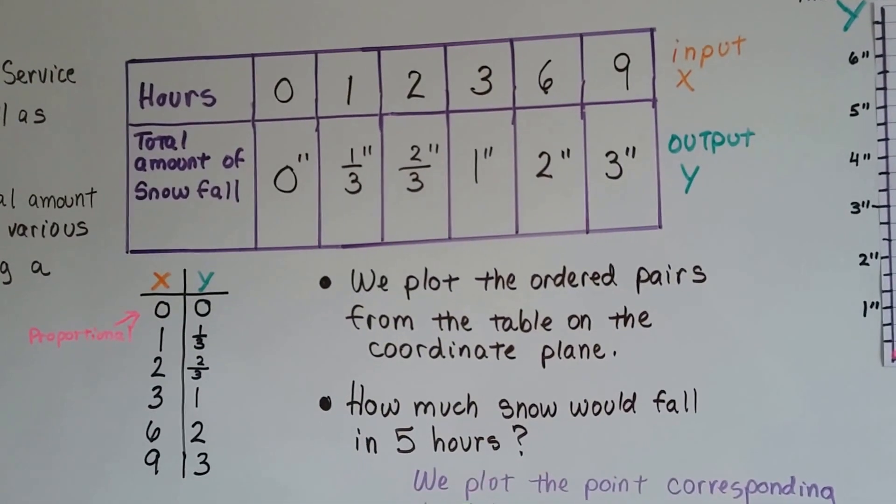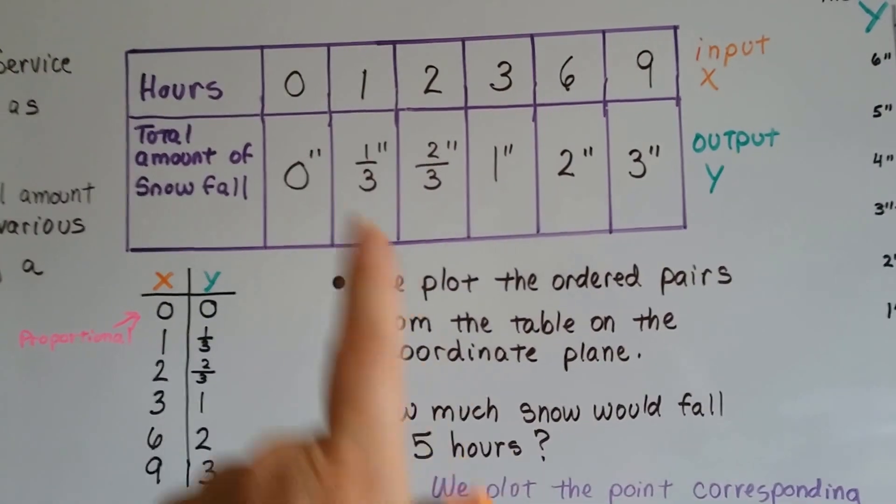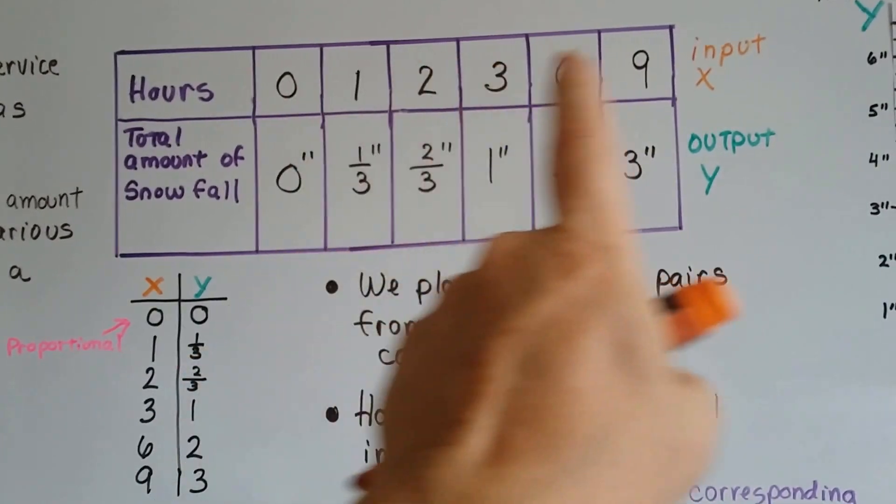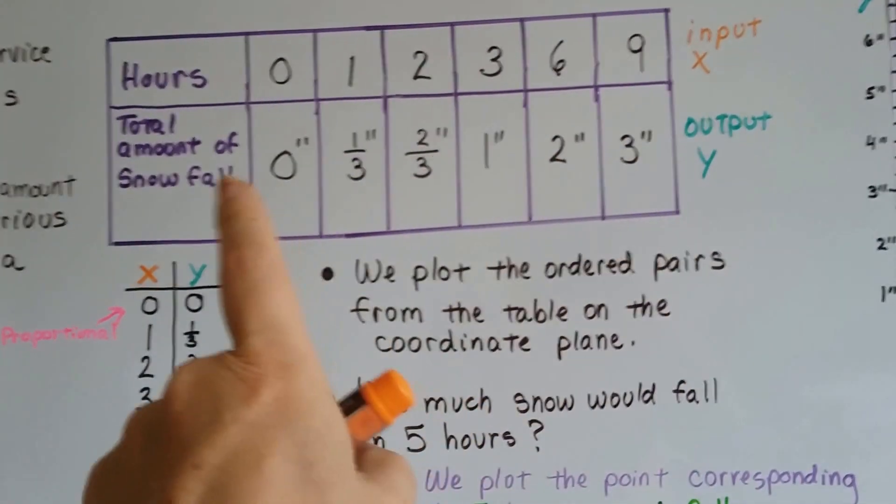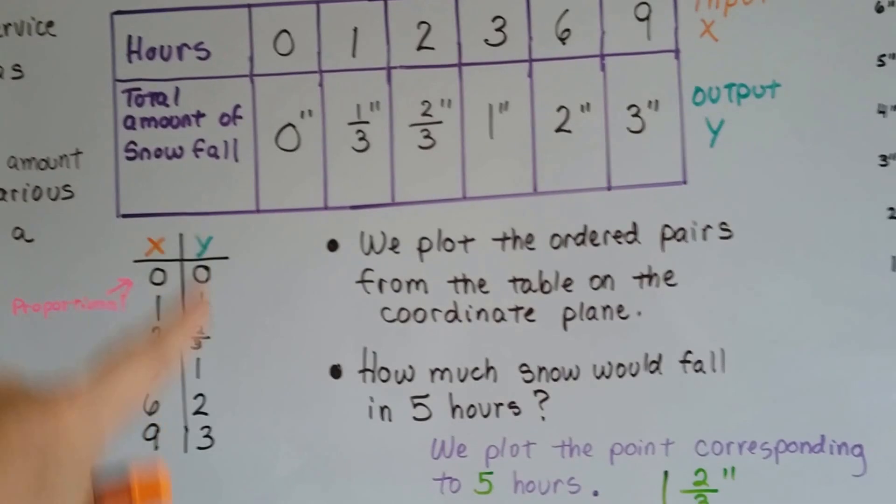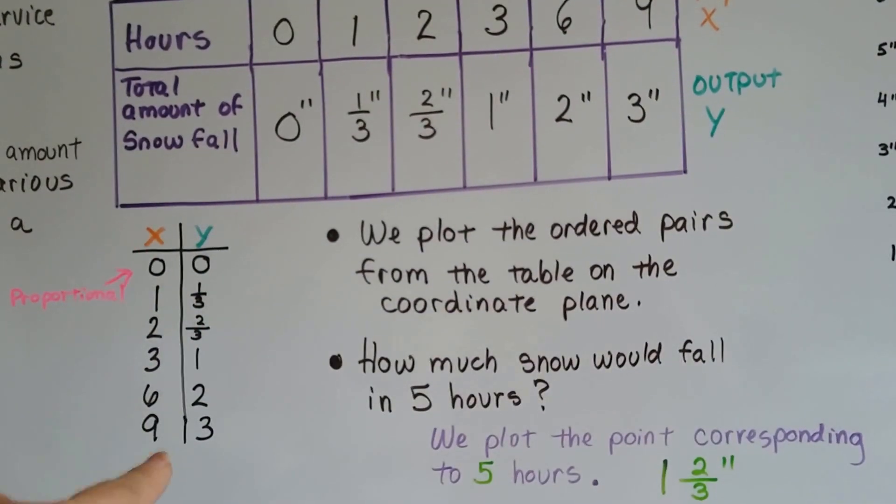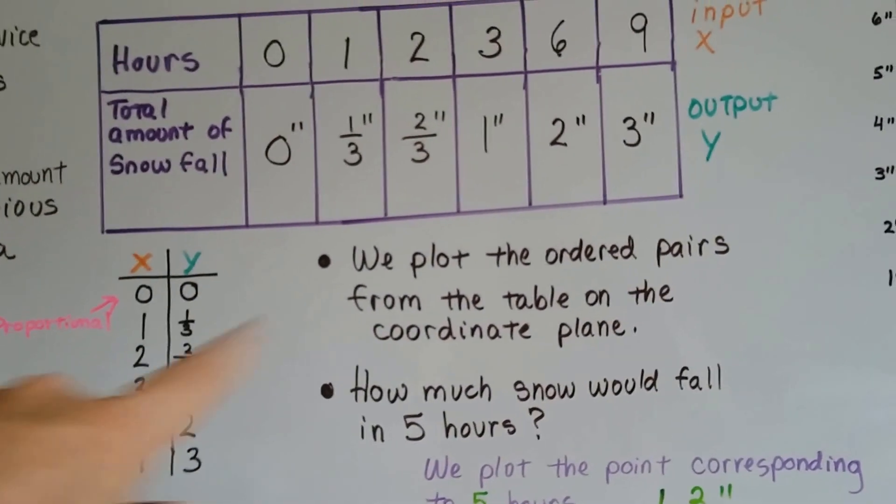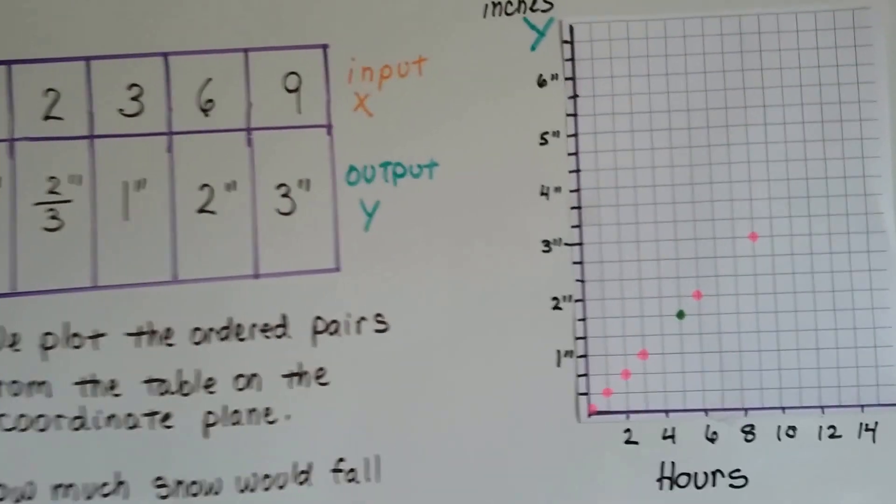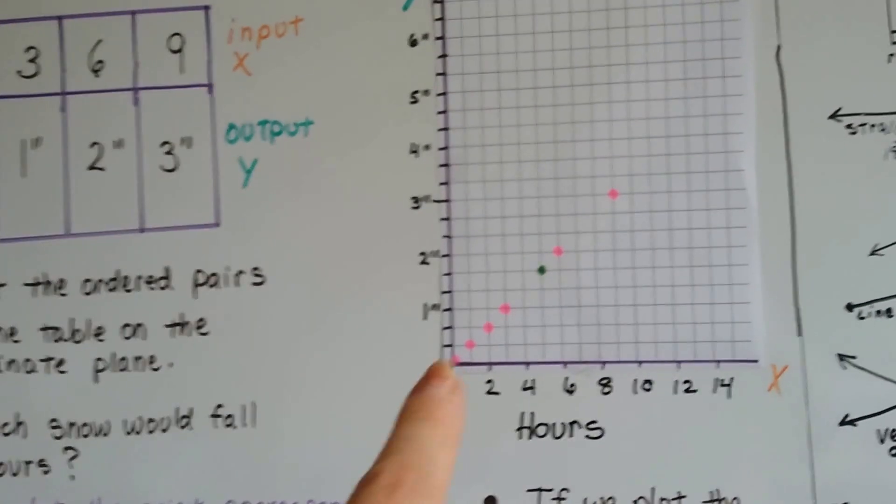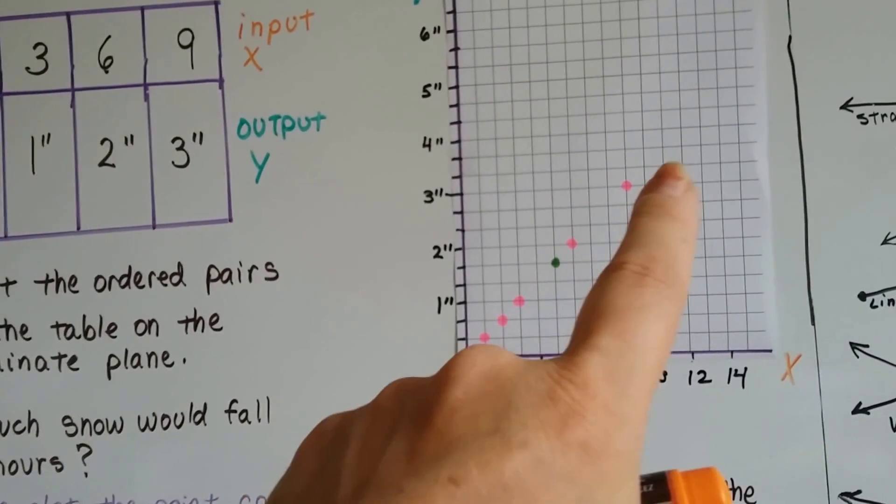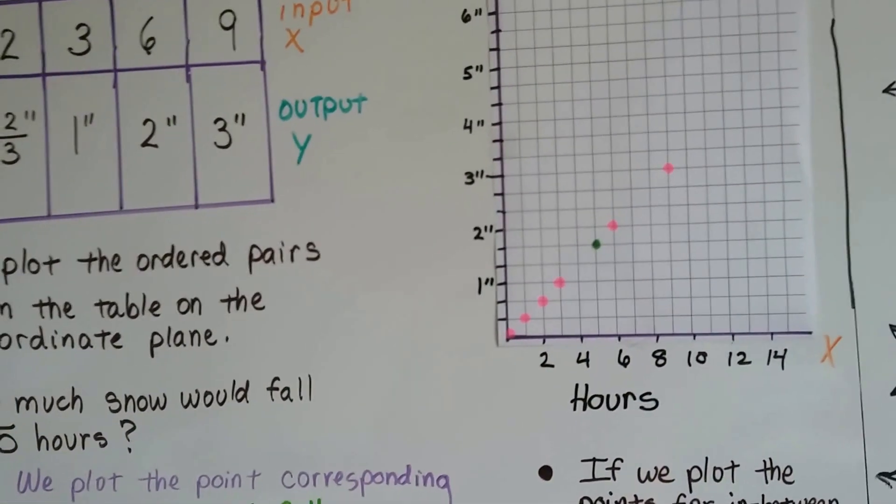We plot the ordered pairs from the table on the coordinate plane. This is a horizontal table with this as the input, the x, and this is the output, the y. So I rewrote it as a vertical table going this way, but it's the same thing. So we're going to plot the points. We can see the pink points that I plotted right here. And you can see what's happening.